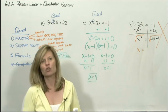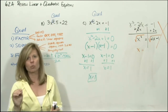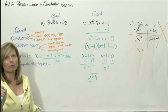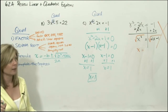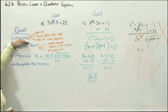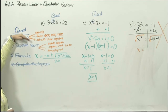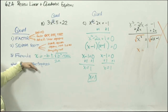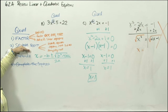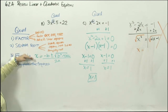So remember with quadratics — and this will be the same rule with trig — first try to factor: get everything to one side, set equal to 0, and break it down. If that doesn't work, look at square rooting. And worst case, use the formula.